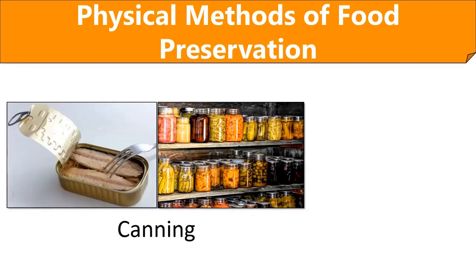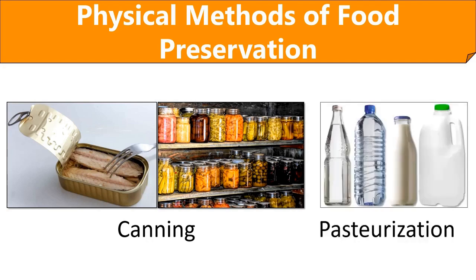Canning or bottling uses water bath and pressure canners to sterilize food jars. Water bath canners are used for high-acid foods with a pH range of 3.6 to 4.6, whereas pressure canners preserve low-acid foods with a pH above 4.6. Food jars are sealed with a top lid to avoid contamination. Pasteurization uses batch and flash methods to deactivate or destroy pathogenic microorganisms.